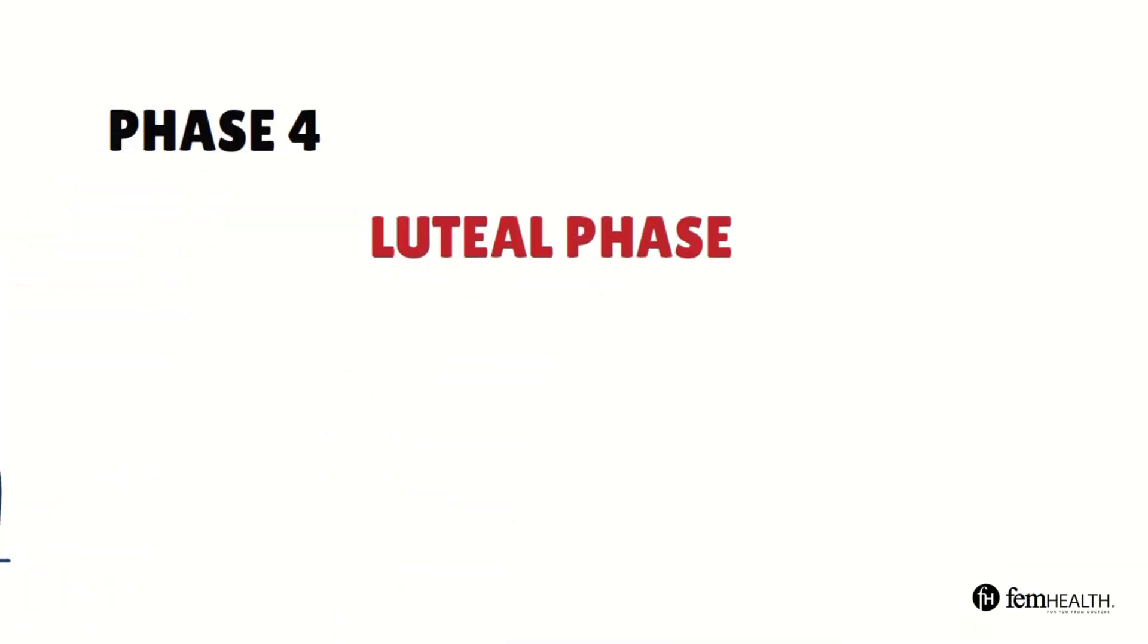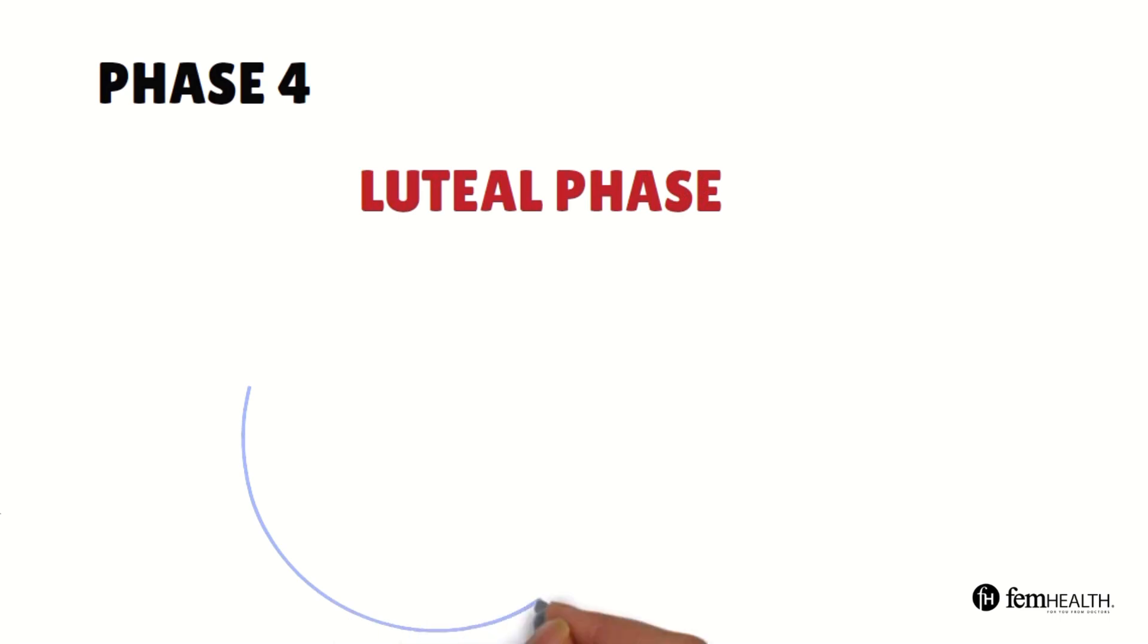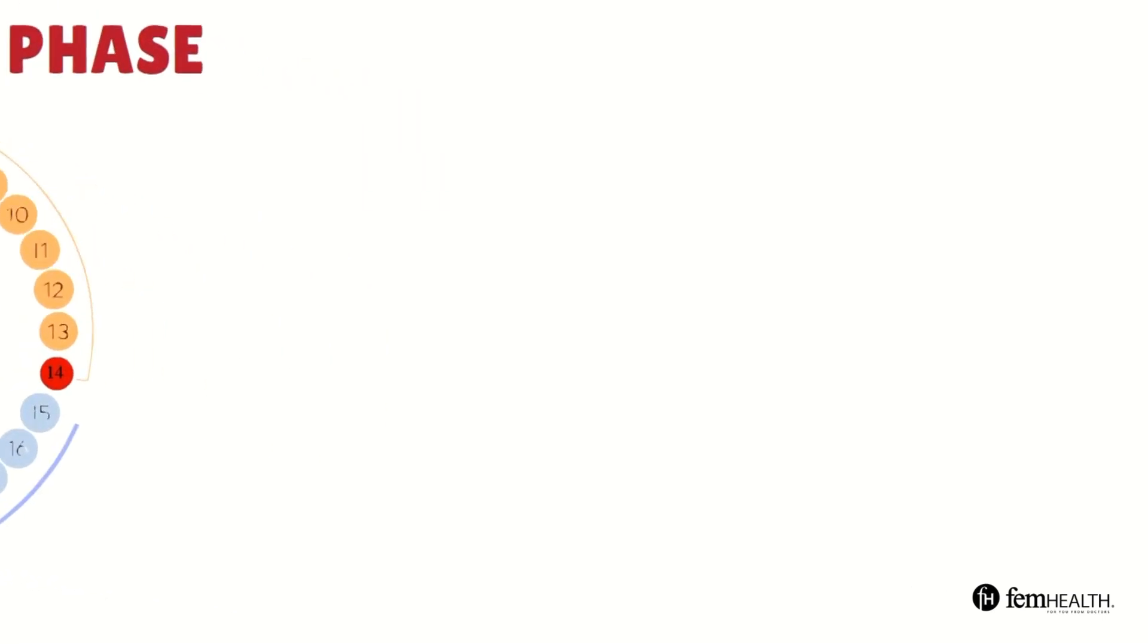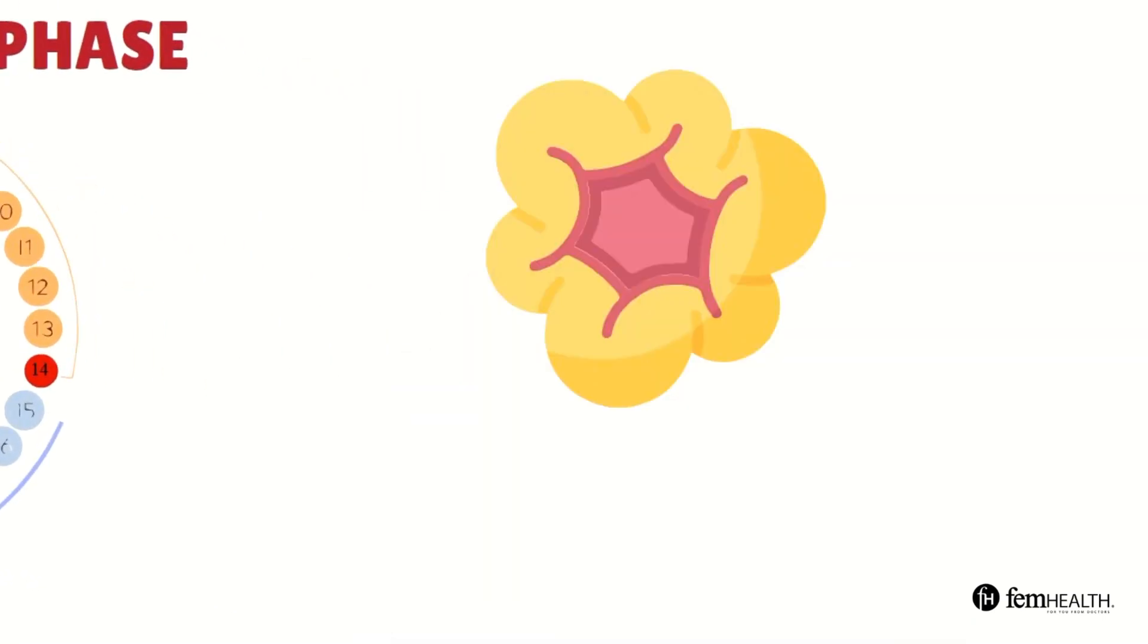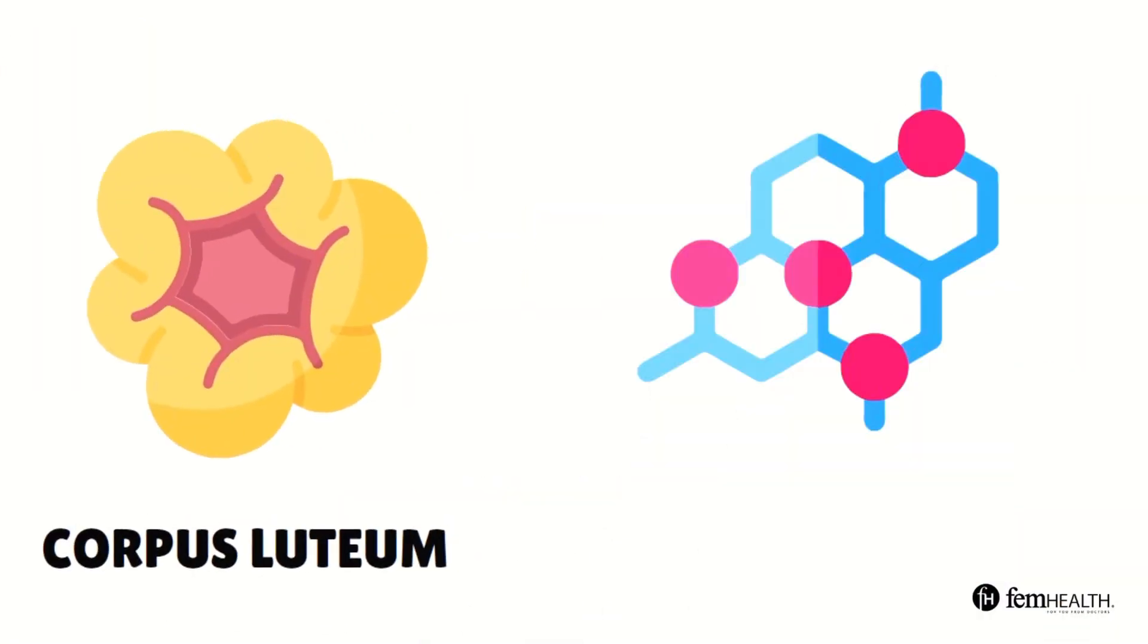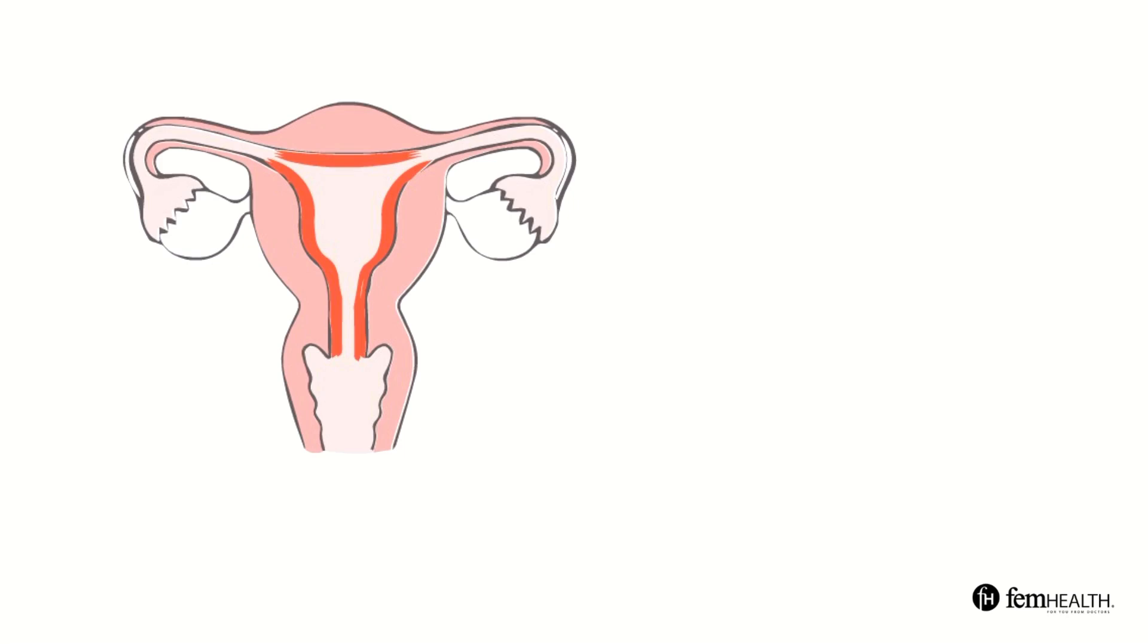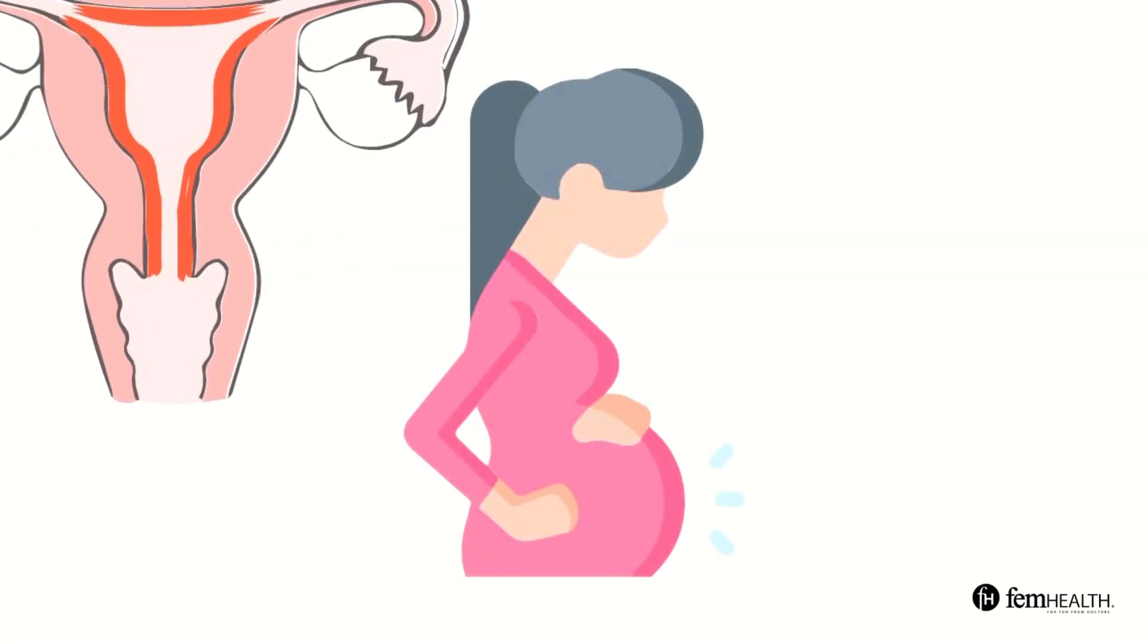Now let's move on to phase four which is the luteal phase which is days 15 to 28. This happens after ovulation. After ovulation the empty follicle in the ovary turns into something called the corpus luteum. The corpus luteum releases hormones like progesterone. These hormones are responsible for keeping the uterine lining thick in the case of pregnancy.